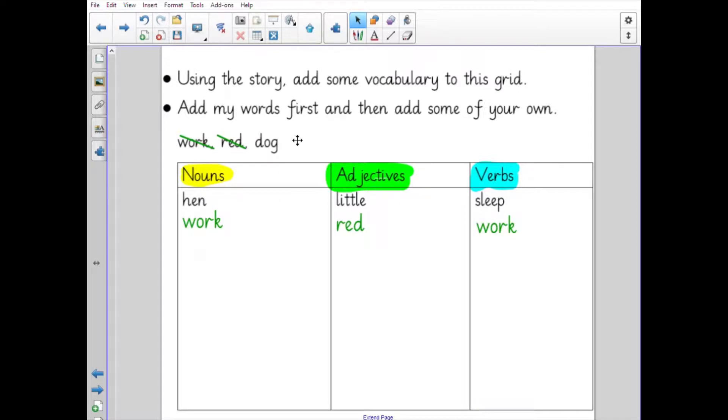...dog. Dog is a noun; it's a name of a thing. So here are the words already done.